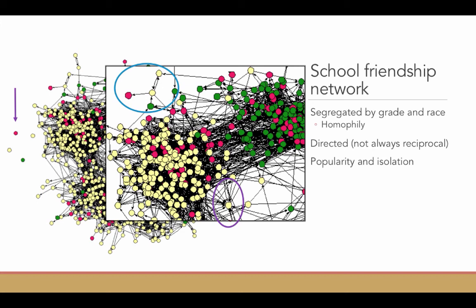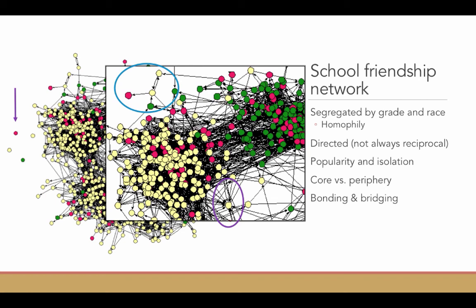We can also think about what we would call the core of the network versus the periphery of the network. The people who are in the middle are going to be the most connected. As you move outside of the social network drawing, you can see that these students are much more on the periphery. A lot of them look like they have nominations to them, but are not nominating anybody in the network as friends. They essentially have one person linking them to that network. That's a very fragile place to be.